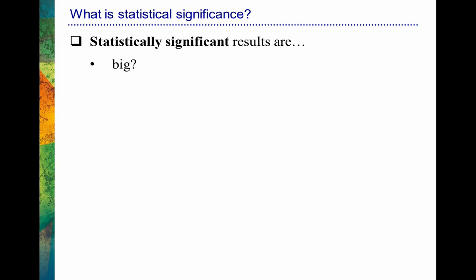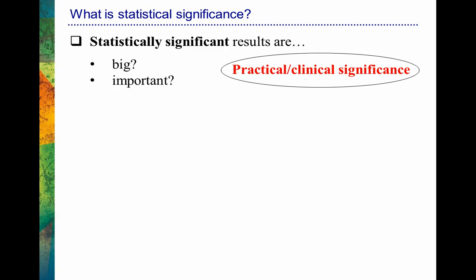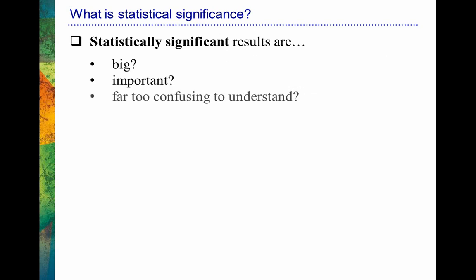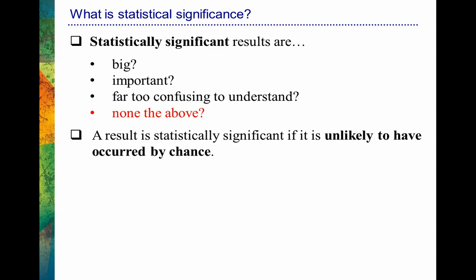Statistically significant results — does it mean that they are big? Does it mean that they are important? That's what most people would probably think when posed with this question. But in general, when we're talking about how big results are, or how important those results are, we're talking about something like practical significance or clinical significance, not really statistical significance. The answer really is none of the above. A result is statistically significant if it's unlikely to have occurred by chance.